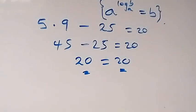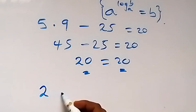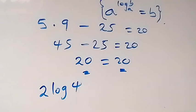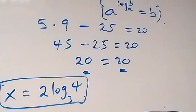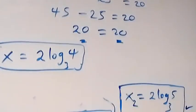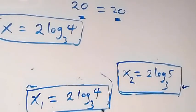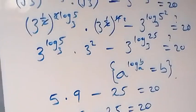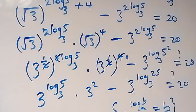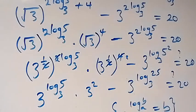Similarly, x₁ = 2 log 4 to base 3 also satisfies the given problem. Therefore, the two values of x are: x equals 2 log 4 to base 3, and x equals 2 log 5 to base 3. Thank you for watching — please subscribe to my channel, turn on the notification bell, and share this video. See you next class, bye for now!